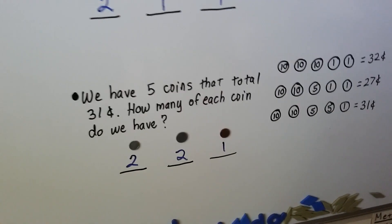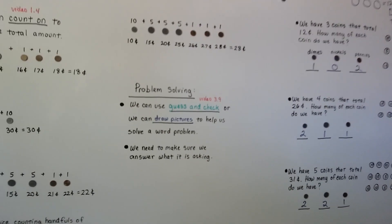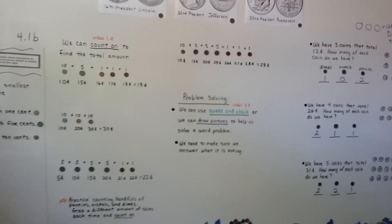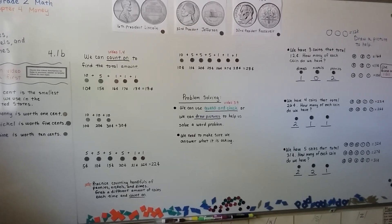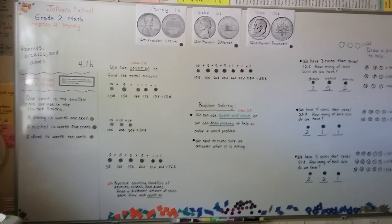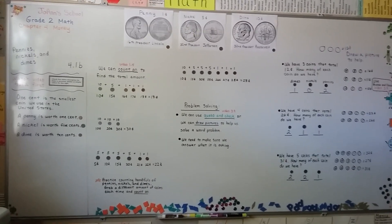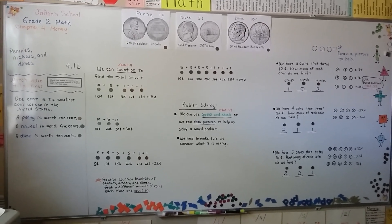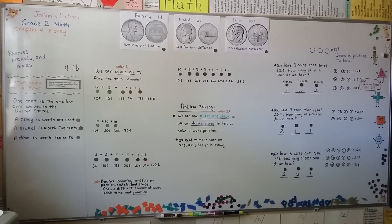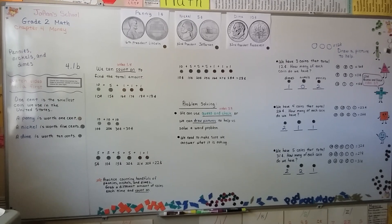So, now you can do this. You need to practice counting the coins, and you can count on. If you're using paper and pencil, you can draw a picture to help you, and you can try guess and check. But when you're counting a handful of coins, just count on. We're going to continue on in this chapter talking all about money. I hope I'll see you in the next video. Bye.